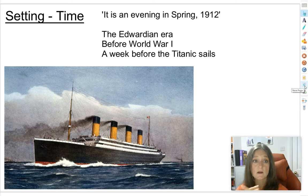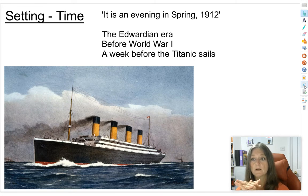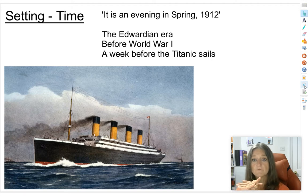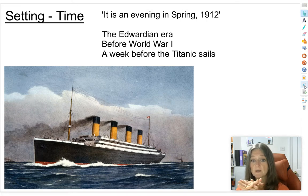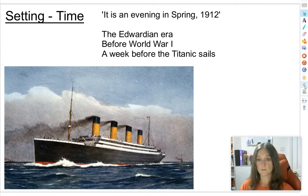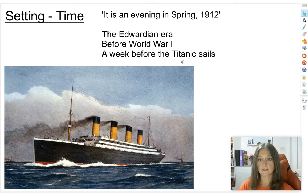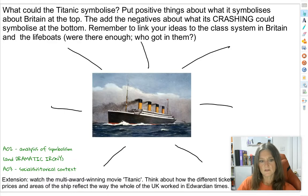The stage directions tell us the play is set on an evening in spring 1912 — in the middle of the Edwardian era, before the start of World War One. It's also set just under a week before the Titanic sails for America. It's really important and significant that Priestley sets it just before the Titanic sails. I want you to think about what the Titanic could symbolise.